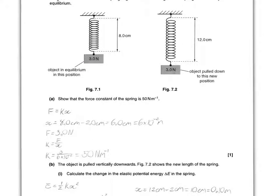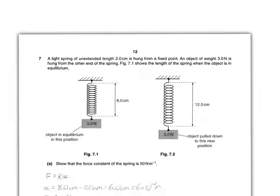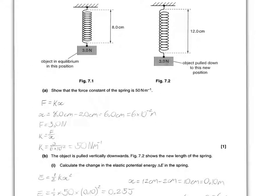Question A states, show that the force constant of the spring is 50N per metre. The equation that has to be used is F equals KX. F stands for the force, K stands for the force constant, and X is the extension. First of all, you've got to find out the extension. You have the total length of 8cm, 8 minus 2. The 2 is gained from the unextended length here. This is equal to 6cm.